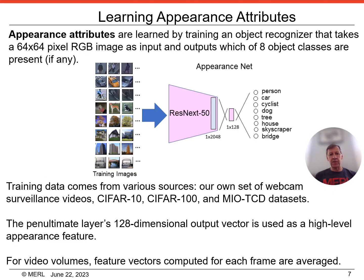One of the high-level attributes our system uses is the appearance attribute. Appearance attributes are learned by training an object recognizer that takes a 64 by 64 pixel RGB image as input and outputs which of eight object classes are present, if any. Training data comes from various sources: our own dataset of webcam surveillance videos, CIFAR-10, CIFAR-100, and MIOTCD datasets. The penultimate layer's 128-dimensional output vector is used as a high-level appearance feature. For video volumes with multiple frames, a single feature vector is computed by averaging feature vectors for each frame.